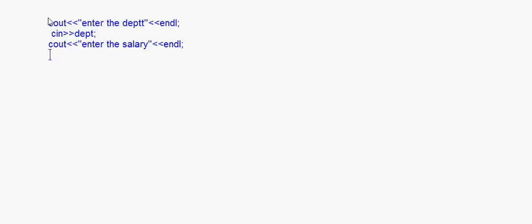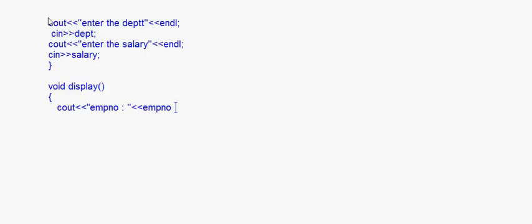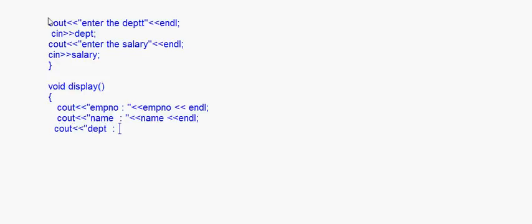The next method is void display, wherein all the data is displayed. I write cout EMP_number, then cout name, cout department, and cout salary, each on a new line with endl.